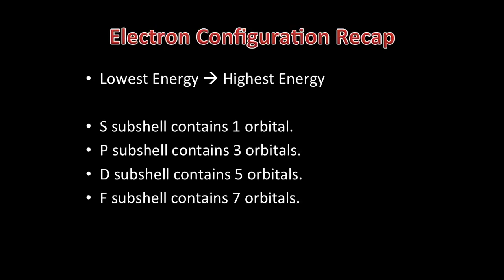Now to begin, on what you should have already known about electron configuration: electrons fill energy levels from the lowest energy level to the highest energy level. Each energy level contains subshells — these are S, P, D and F. Each subshell contains orbitals, and each orbital can contain up to two electrons.